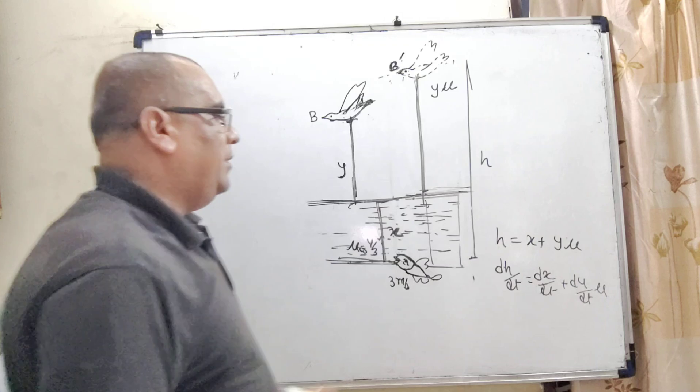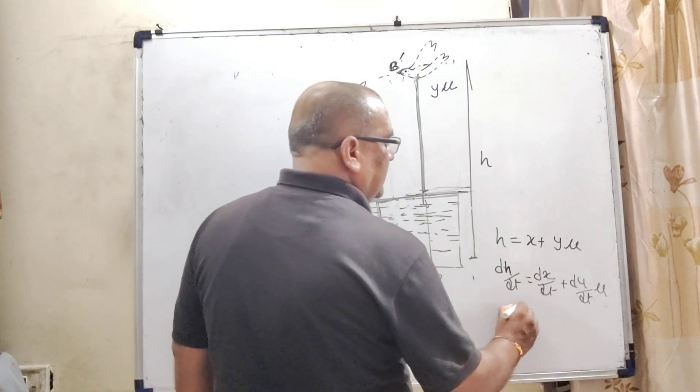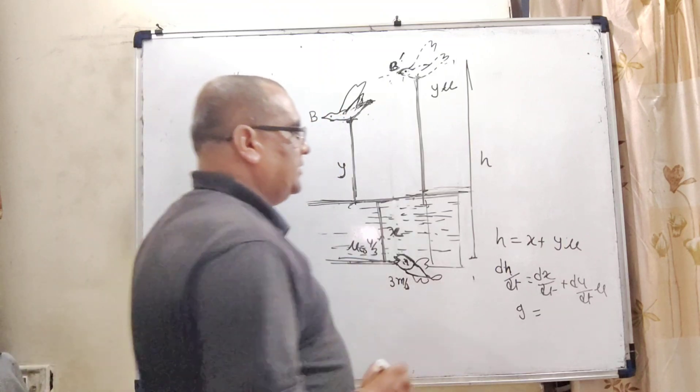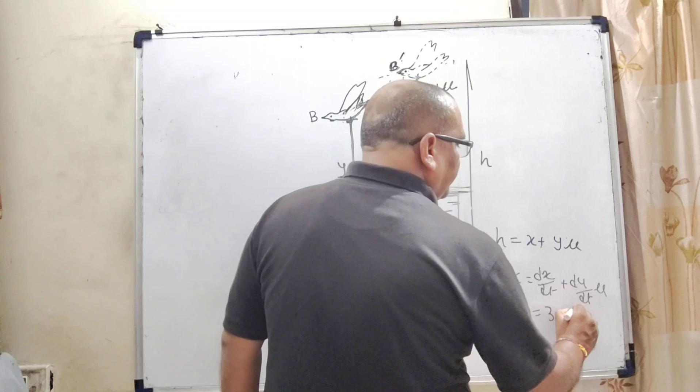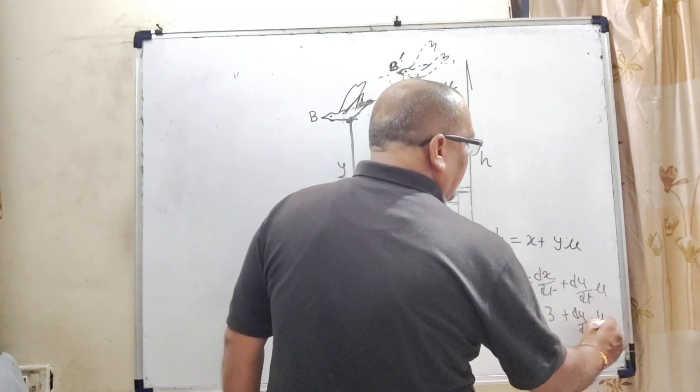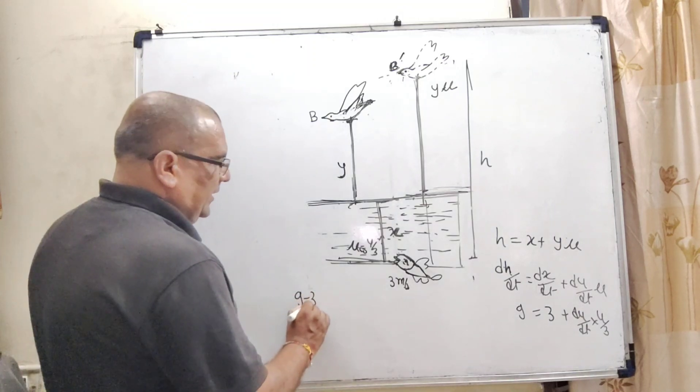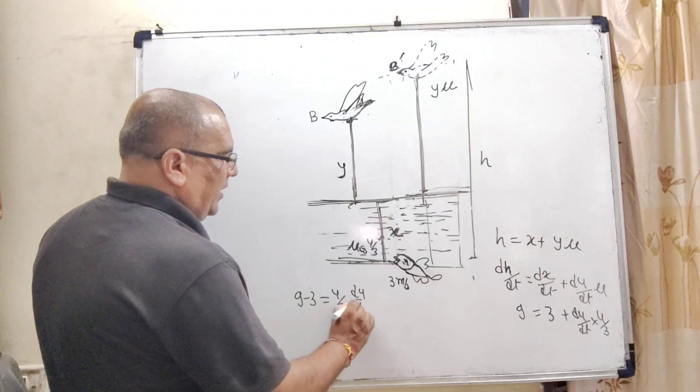dh/dt, that is apparent velocity of the bird, that is 9 is given in the question. And dx/dt, 3 meter per second. And dy/dt, this velocity, actual velocity of the bird and mu, refractive index of water, is given 4 by 3. So, 9 minus 3 is equal to (4/3) dy/dt.